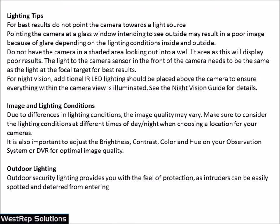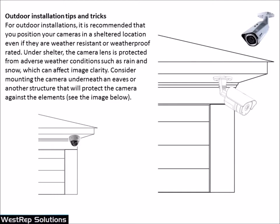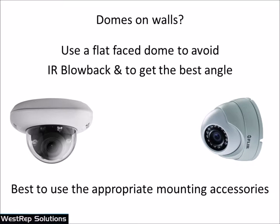When placing cameras under eave troughs, if you're going to use a bullet camera — which is often preferred because it has a shield — you can put it right in the very back towards the building. When using a dome, pull it right out to the very front so you're not getting IR blowback shining off the soffit and coming back into the camera. Think about how the IR illuminators inside the camera are going to perform when mounted.